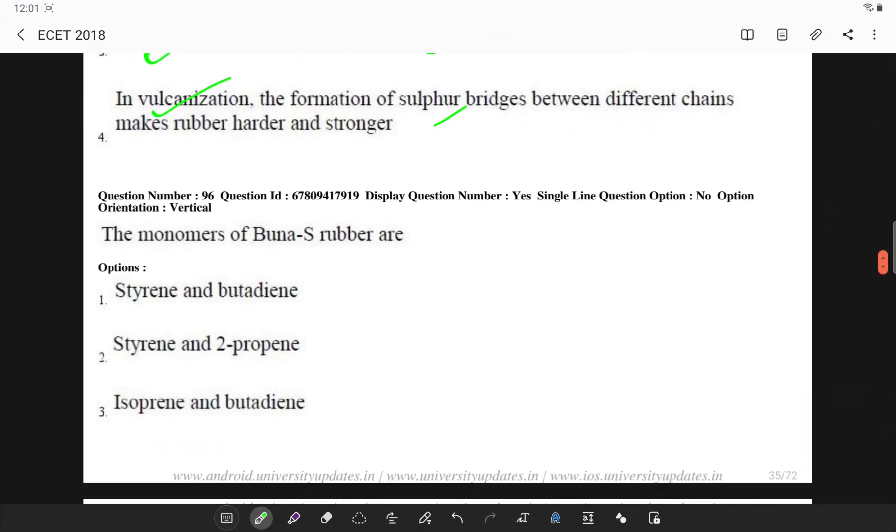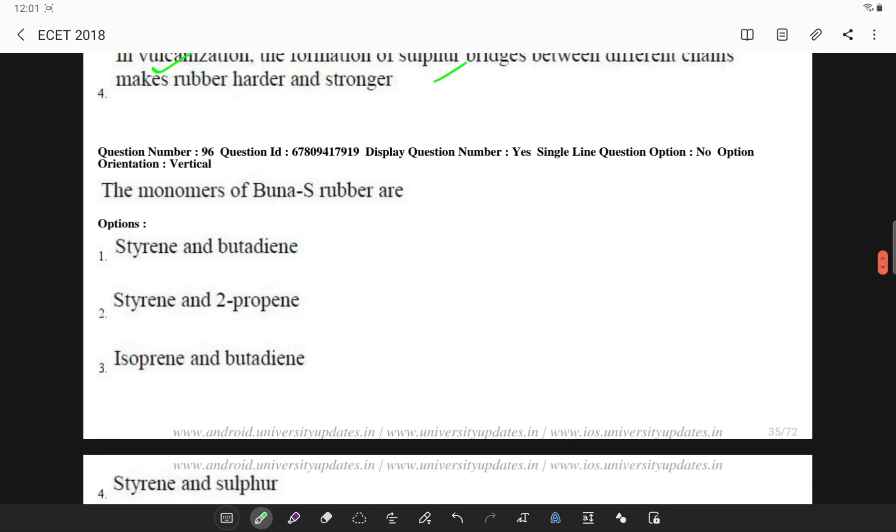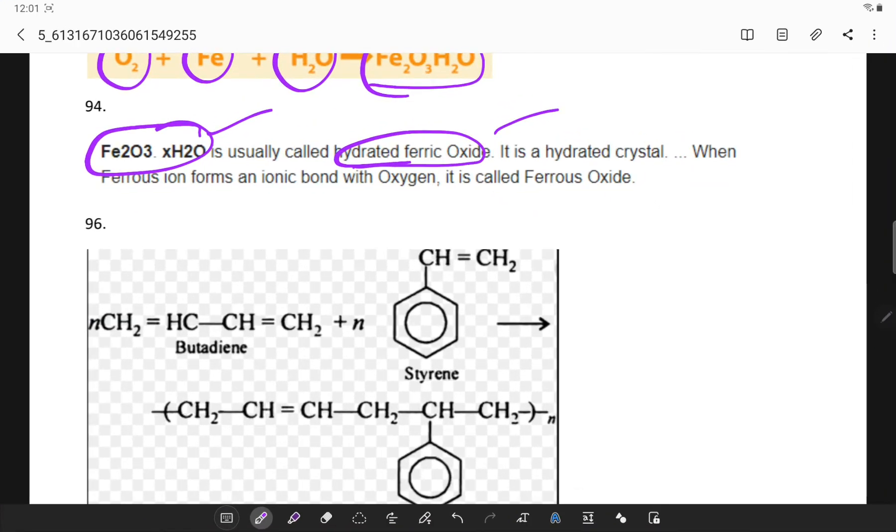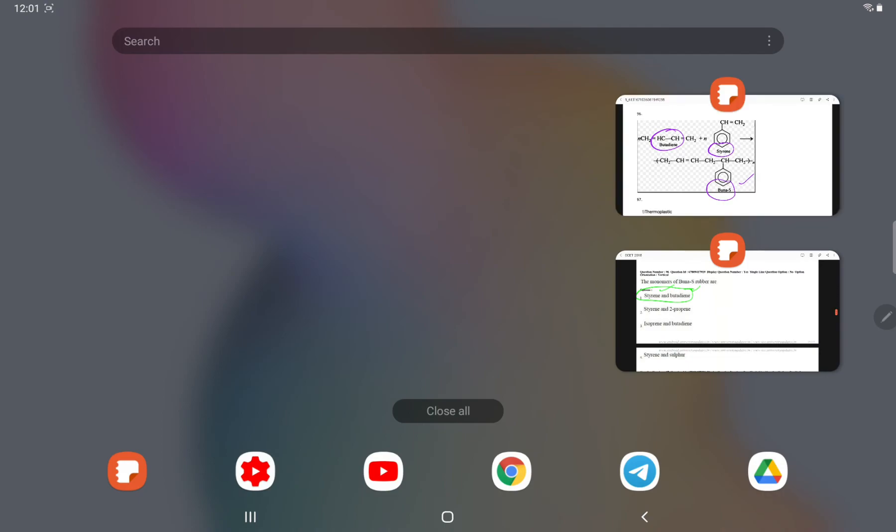The monomers of Buna-S rubber are, this is a very standard question which happens many times. Styrene and butadiene are the monomers of Buna-S rubber or cold rubber. See the diagram, butadiene and styrene, we will have our Buna-S rubber.